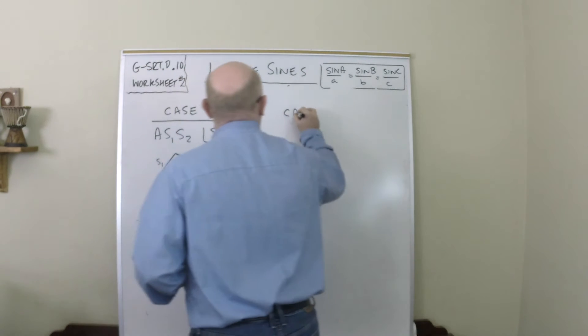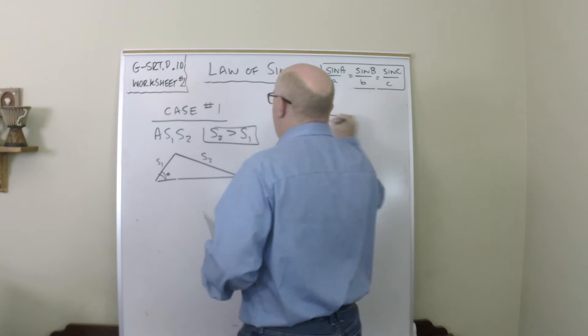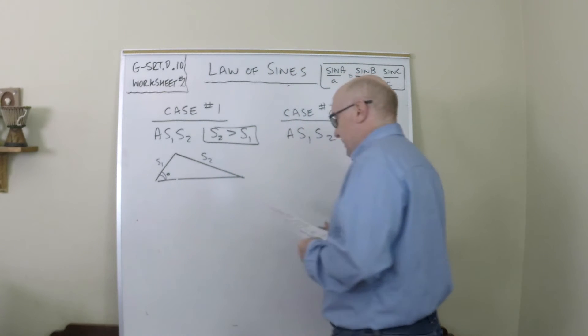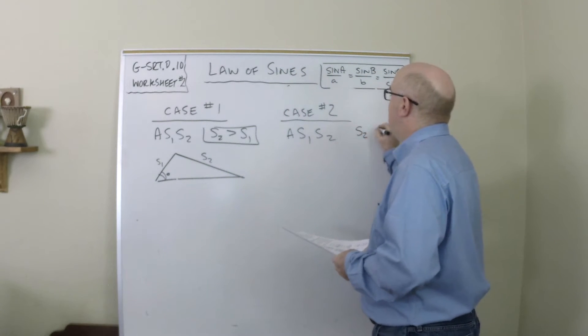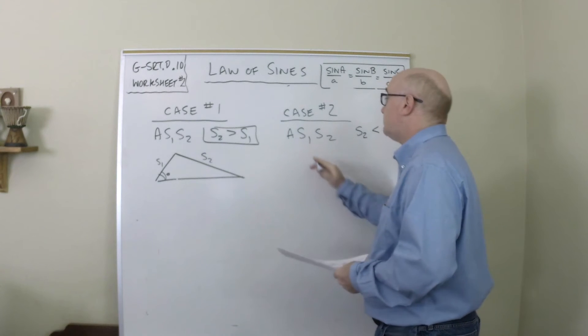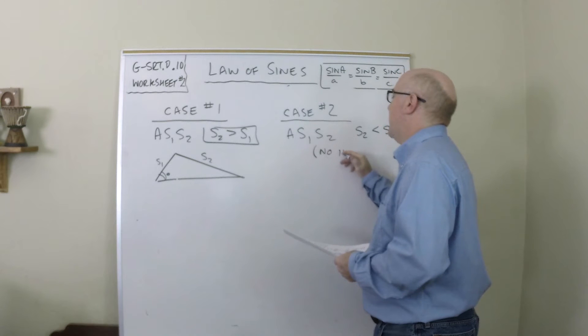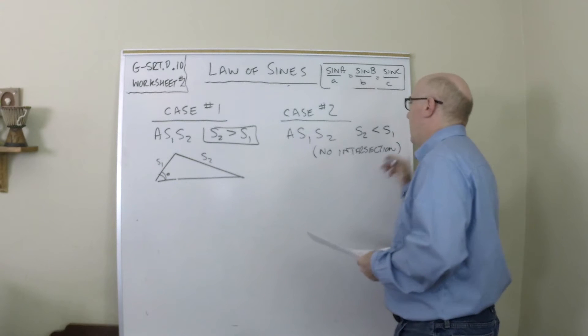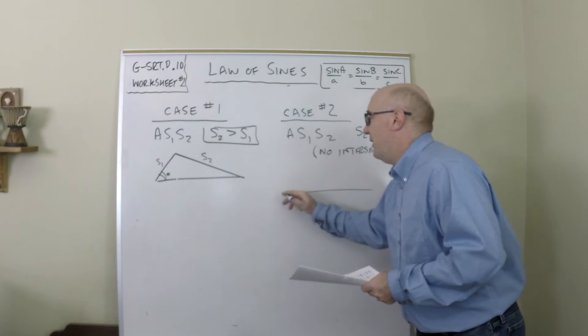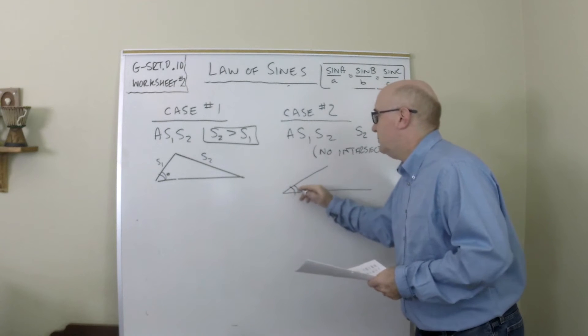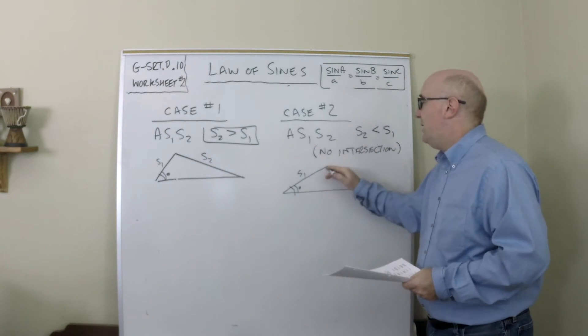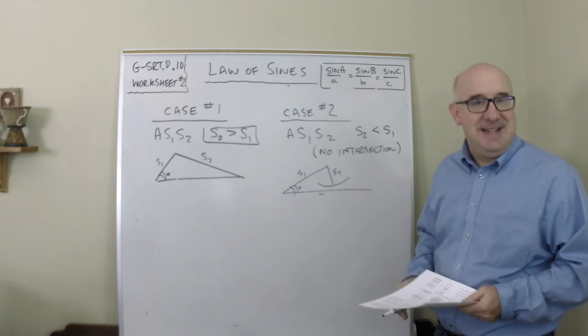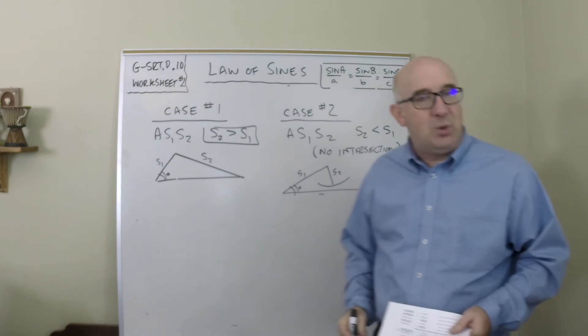In case 2, I'm going to come back and explain more here, but don't worry. In case 2, where angle side, where side 2 is shorter than side 1, and there's no intersection. Now this is going to be a weird one. You're going to say, why bother with this? But this is the idea that you have some angle, let's say the same angle, the same side 1, but side 2 is shorter than the length that's needed, and it doesn't quite close the triangle.